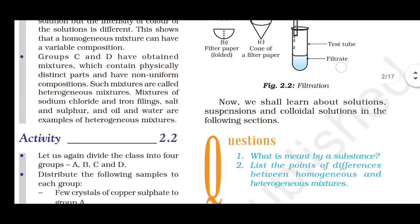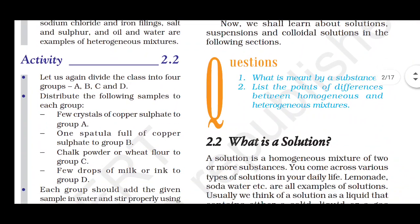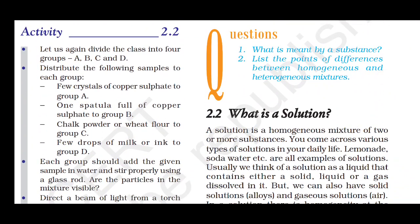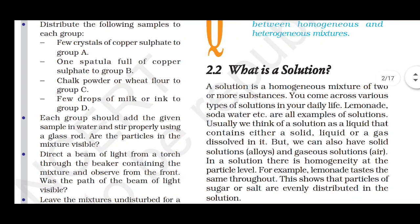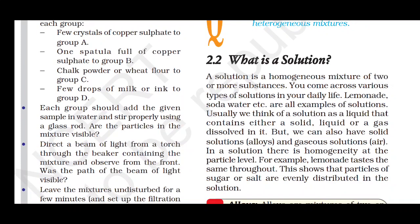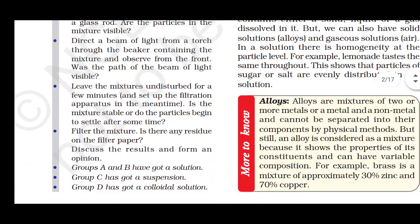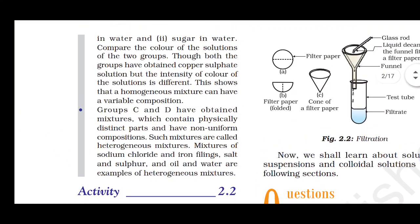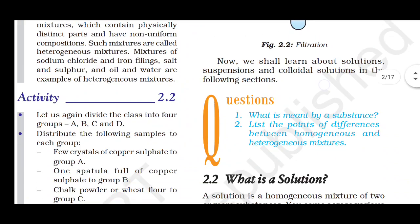Heterogeneous mixtures are those which have a non-uniform composition — we can see visible boundaries and particles separated, either with the naked eye or under a microscope. Examples of heterogeneous mixtures are sugar and salt mixture, salt and sand mixture, polluted air, muddy water, etc. You can go through the activity to see which substances are homogeneous and heterogeneous mixtures.